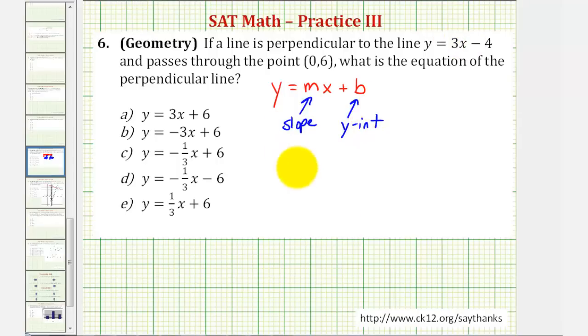So if we're given the linear equation y equals 3x minus 4, we should recognize that the given line has a slope of positive 3, which we can also write as 3 over 1.